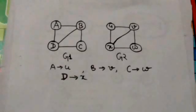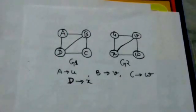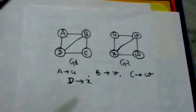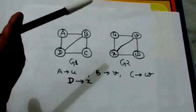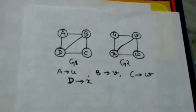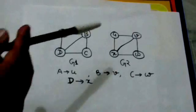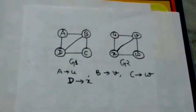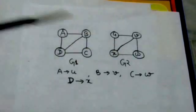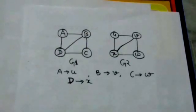There is an edge between the vertices A and D in G1. In graph G2, there is an edge between the vertices corresponding to vertices A and D, that is between vertices U and X. Therefore, these two graphs G1 and G2 are isomorphic.